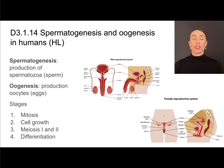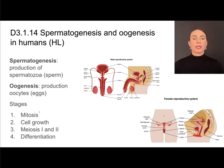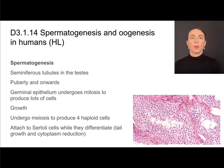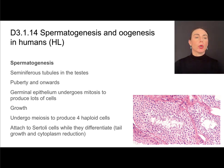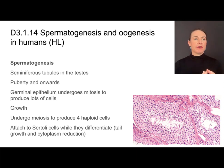Oogenesis is the production of oocytes, which will mature into eggs. Both of them follow the same stages: they start with mitosis, there's a time of cell growth, then meiosis one and two, and then differentiation. Spermatogenesis takes place in the testes, specifically in a structure called the seminiferous tubule. Inside the testes is this group of tubules — the seminiferous tubules.